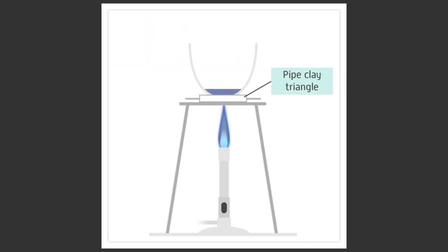The crucible needs to be placed on a pipe clay triangle and heated on a tripod with a blue Bunsen burner flame for several minutes. The pipe clay triangle is a piece of equipment used to hold the crucible on the tripod. You need the flame to be as hot as possible so you hear a roaring noise. Make sure the air hole on the side of the Bunsen is fully open to achieve this.